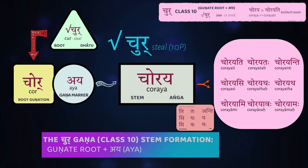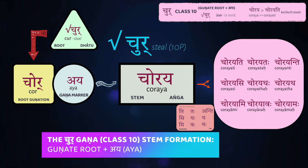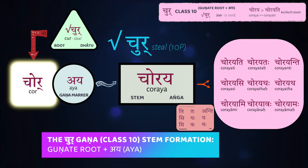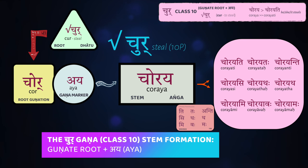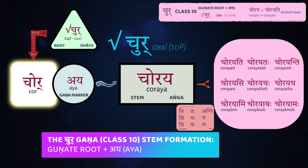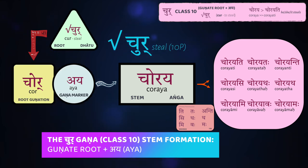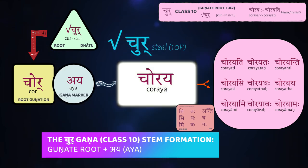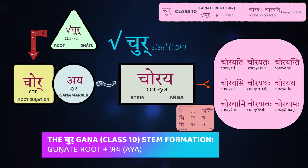For the tenth class, what we're going to do to form the stem is: first, we strengthen the root by gunating it, and then we add our gana marker, which is aya. So chur gunates first to chor, then you add aya to get your stem choraya, and then you add your endings — chorayati.